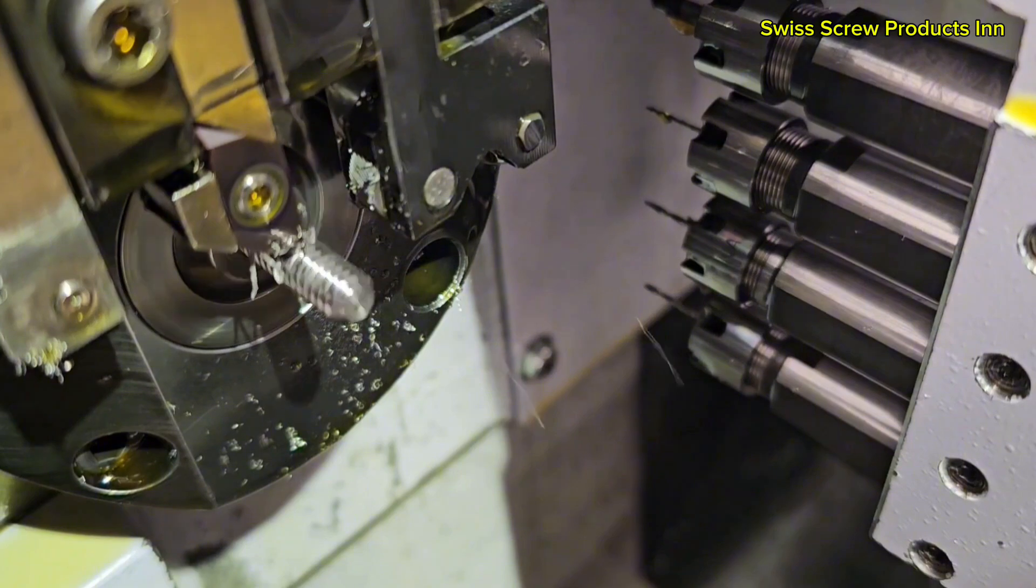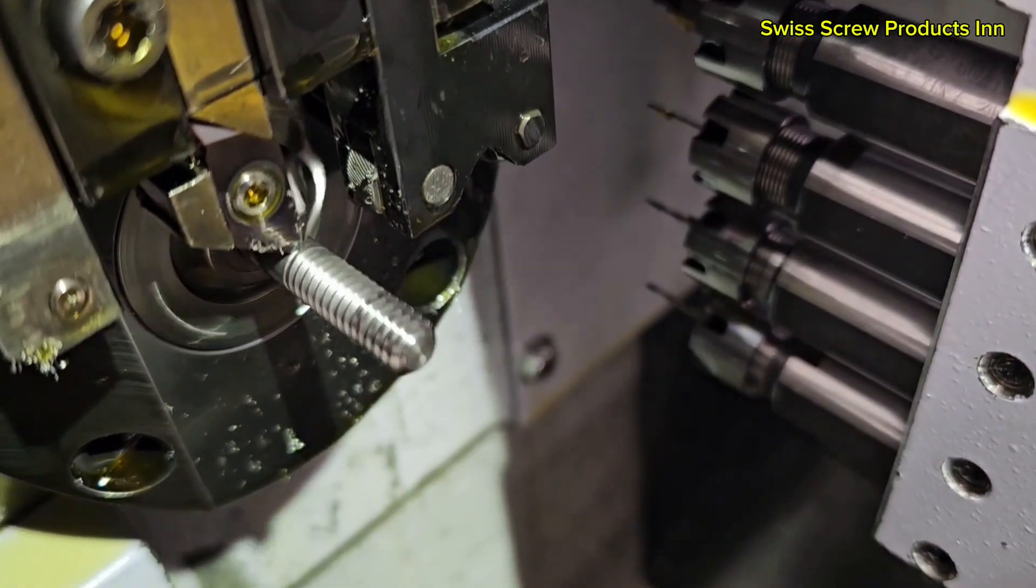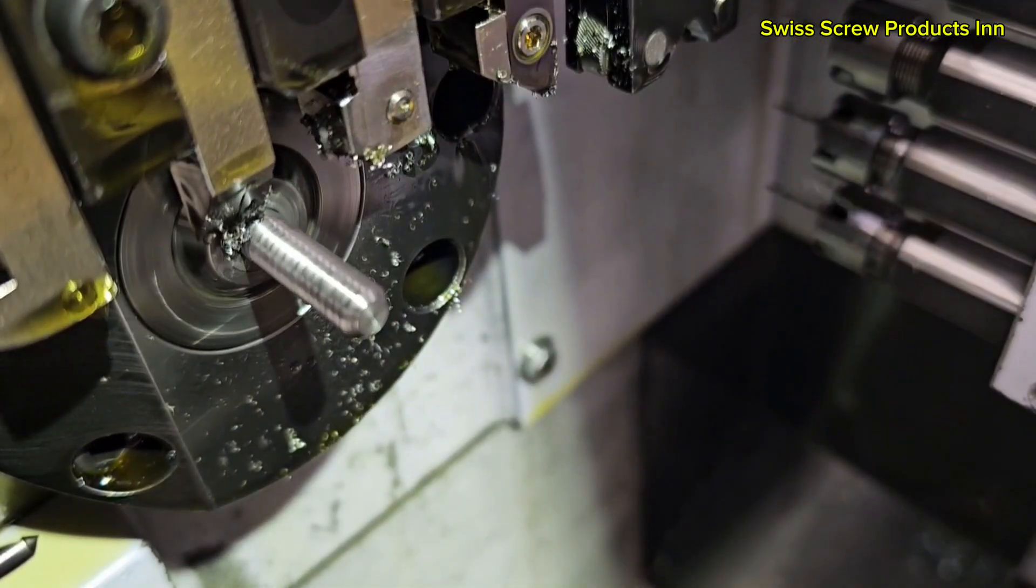For example, one tool might be cutting the part's outer diameter while another is drilling the center, all during a single cycle.